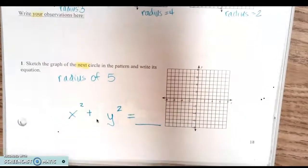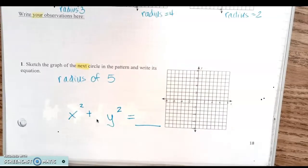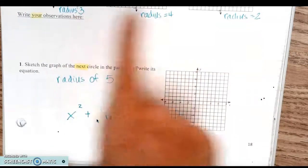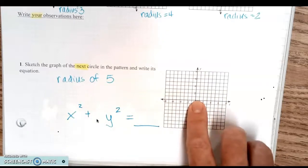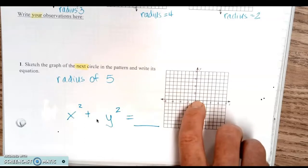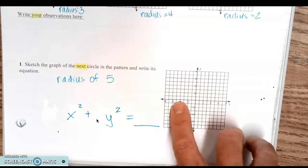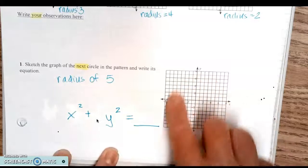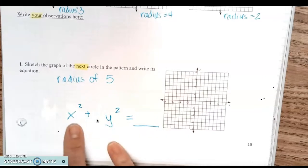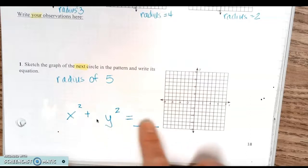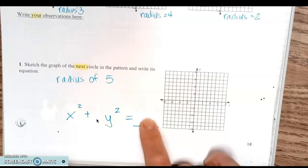At the bottom, sketch the graph of the next circle in the pattern and write its equation. We had radii of 2, 3, and 4, so let's do a radius of 5. We're still centering it at (0, 0). Put your center at the origin, then count five in each direction — five right, five up, five left, five down — place a point at each, then draw a smooth circle through all four outer points. Don't go through the center. Go around a couple of times until it's fairly smooth, then clean it up with your eraser.